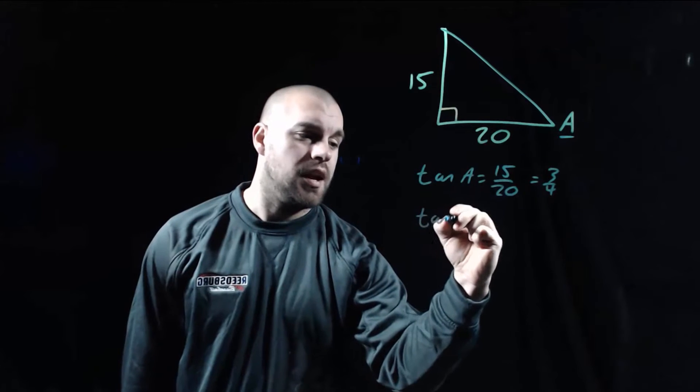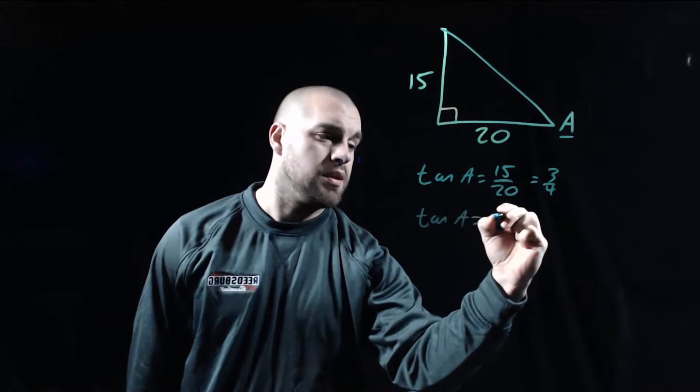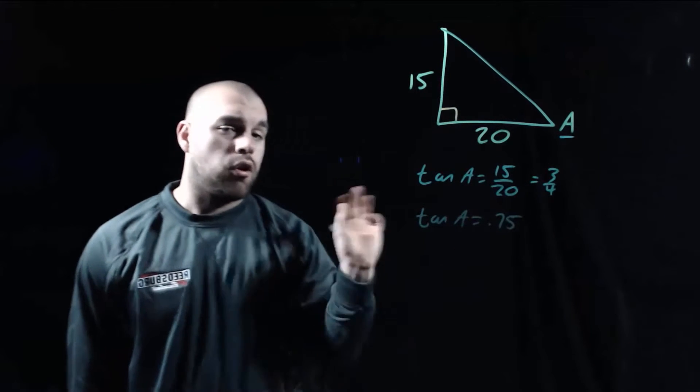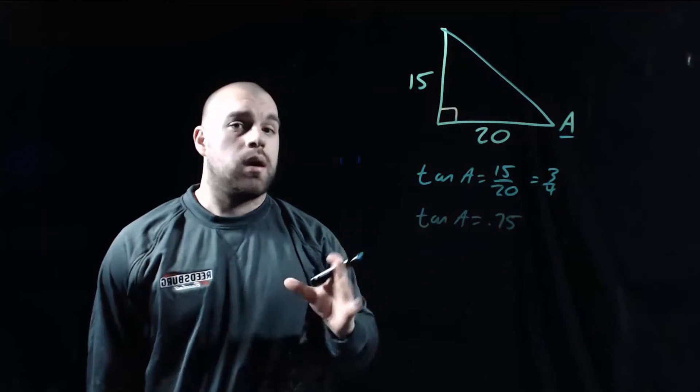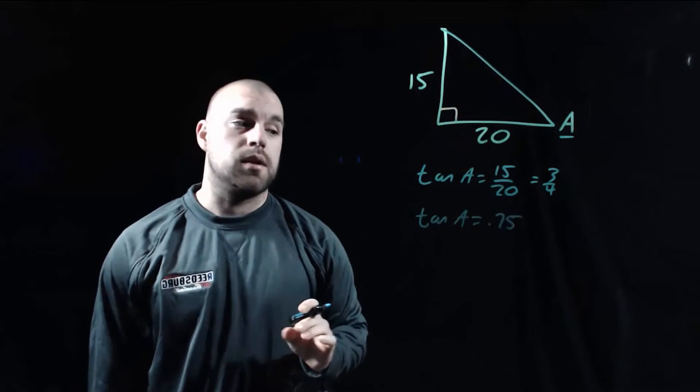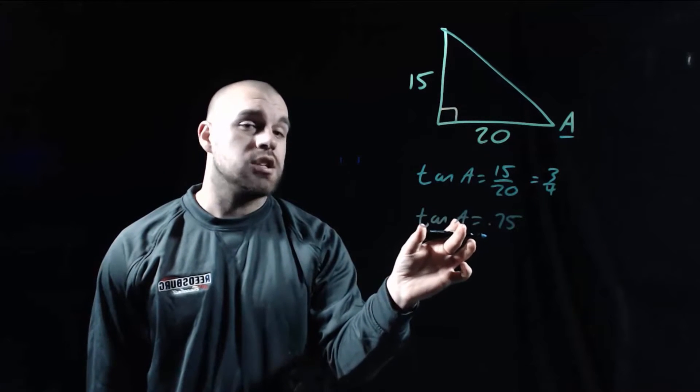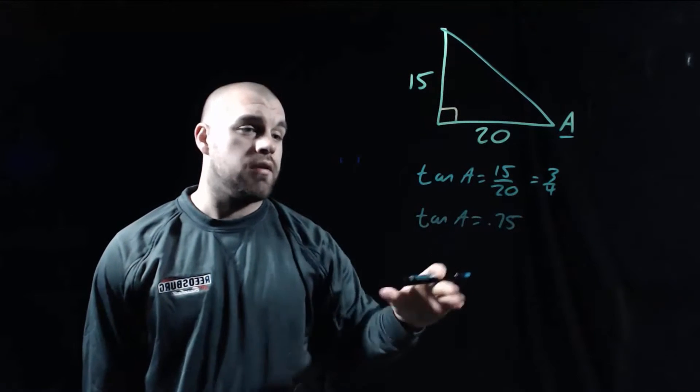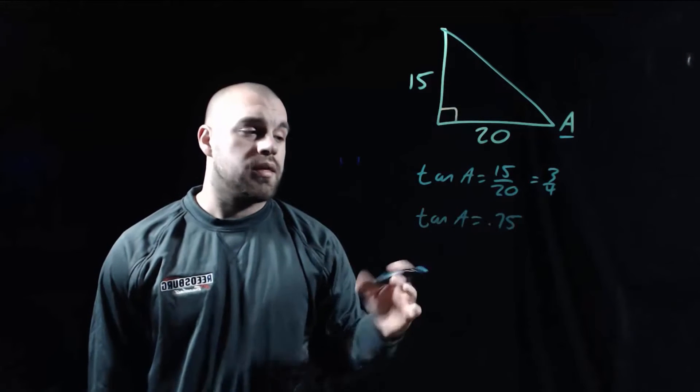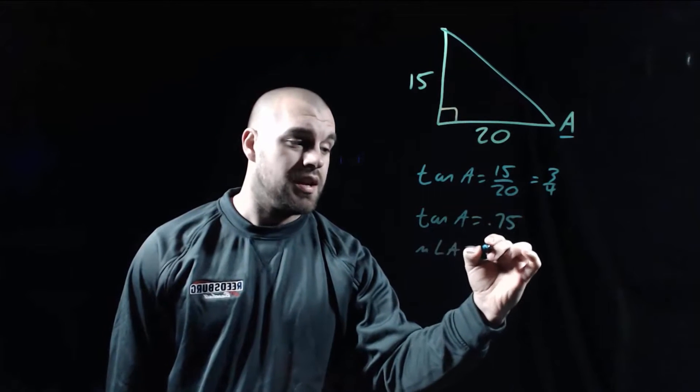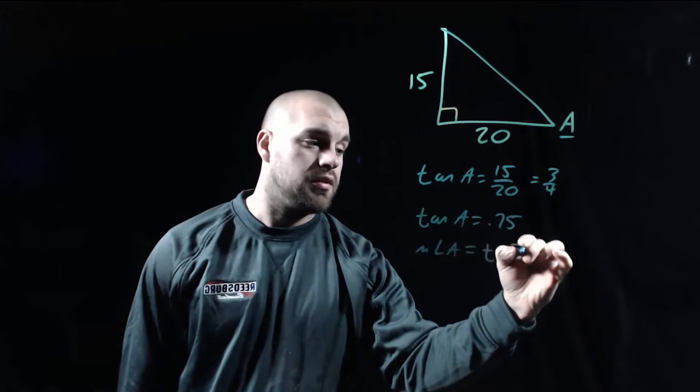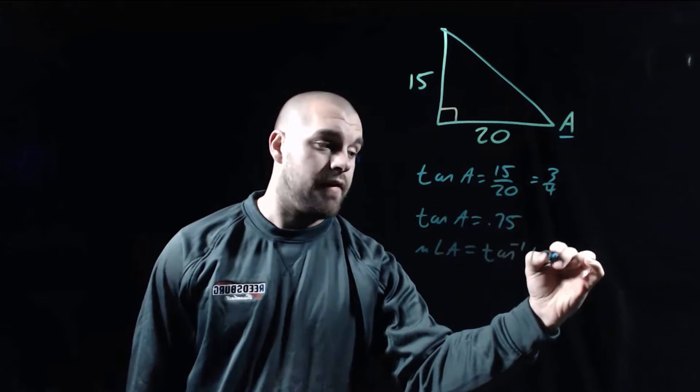So now our equation says the tangent of angle A equals 0.75 and our goal is going to be to figure out what A is. So we need to get A all by itself. This is where our inverse trig ratios are going to come into play. Because the tangent of angle A is equal to 0.75, what I can do is rewrite this equation to say that the measure of angle A is going to equal the inverse tangent of 0.75.